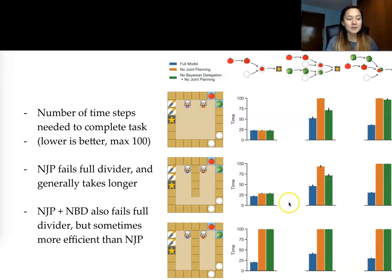And the no joint planning and no Bayesian delegation also fails for similar reasons, but sometimes it is also more efficient than no joint planning.